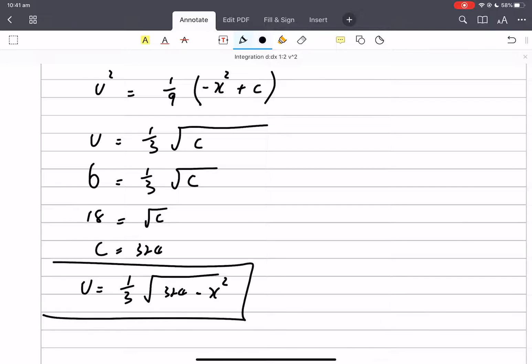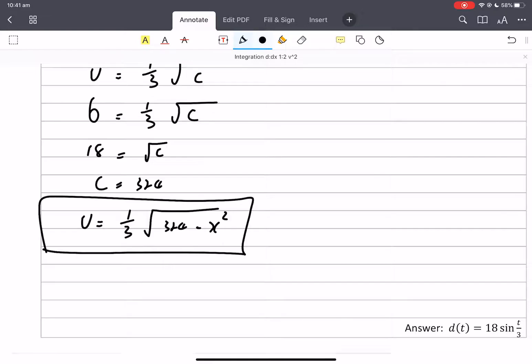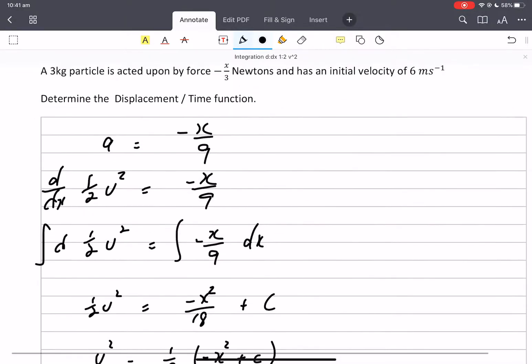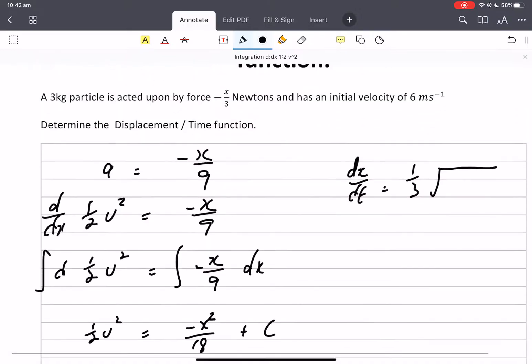So that job is done, but that's not a displacement time graph. There's no time anywhere in there apart from this v. V is dx dt. So let's just go up the other side here.